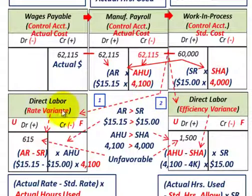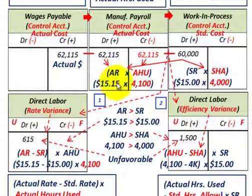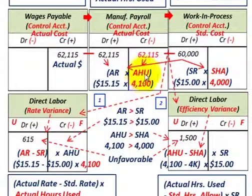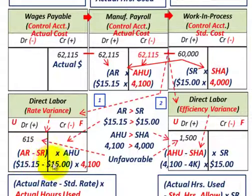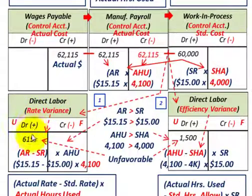Starting with our direct labor rate variance: our actual rate was $15.15 per hour and our standard rate was $15.00. The labor rate variance is the difference between actual rate and standard rate times actual hours used. So: ($15.15 − $15.00) = $0.15 difference × 4,100 actual hours = $615. We debit direct labor rate variance for $615.